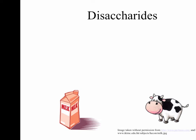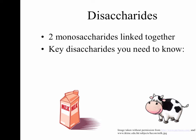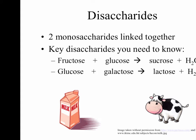Di means two, so a disaccharide is when you string two monosaccharides together. Some key disaccharides: fructose and glucose give you sucrose; glucose and galactose give you lactose, which is the sugar in milk; and if you string together two glucoses, you get maltose, which is also a pretty common sugar found in food.